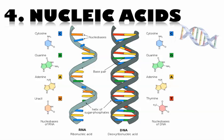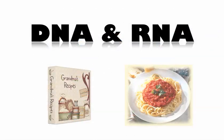Last but not least, the fourth organic molecule is nucleic acids. They come in two types: RNA and DNA. DNA is the code — the recipe book, the instructions for how to make proteins. RNA is in charge of actually making those proteins. They work together to build you up. Make sure you smile and have a good day.